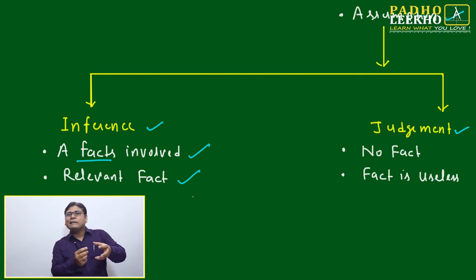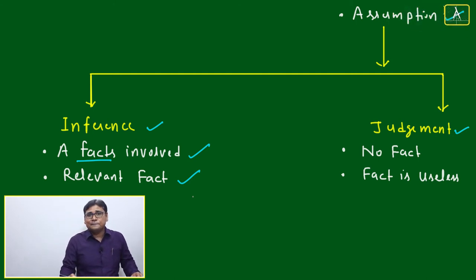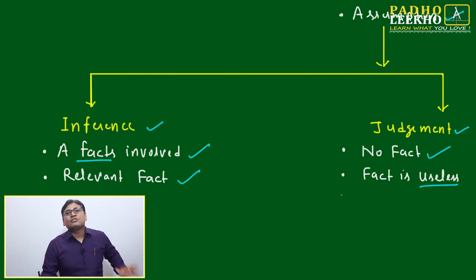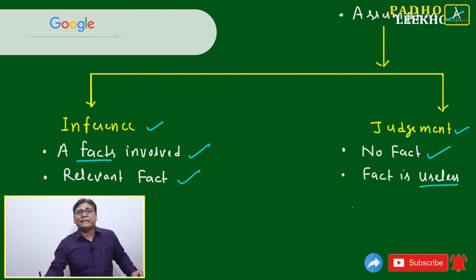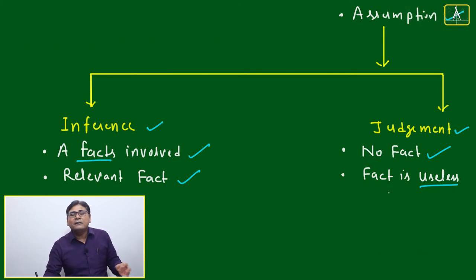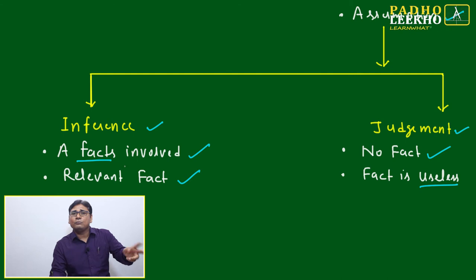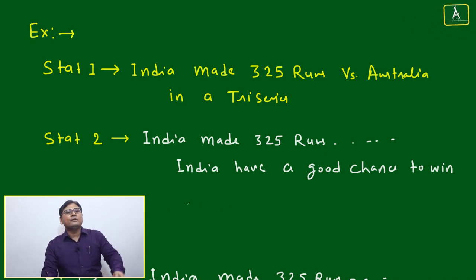Inference is like adding a little 'masala' — you heard something, you add a little bit, you tell someone else who adds a little more. That is inference. But sometimes we add too much masala and it becomes totally wrong — that is judgment, where the fact is almost negligible and it becomes totally personal or political opinion with no relevant fact. If some fact is there but presented positively or negatively with opinion, that too can shift between inference and judgment.